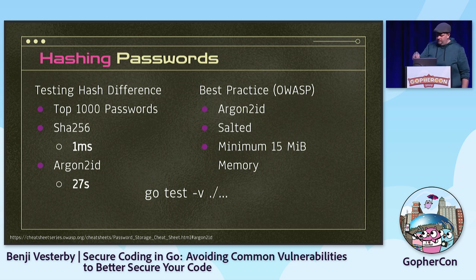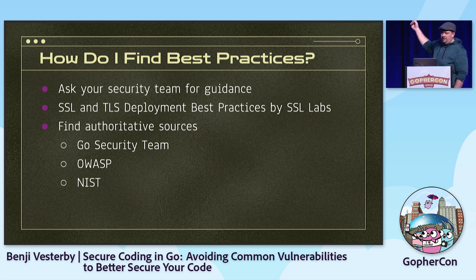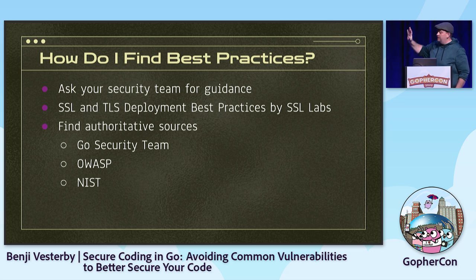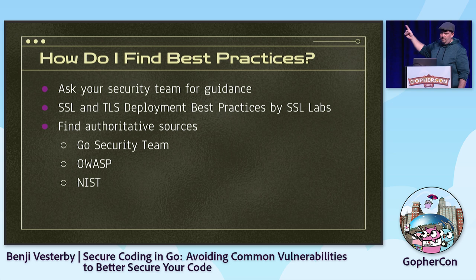For best practices, look to OWASP as a good resource. Ask your security team if you have one. For TLS, TLS 1.3 means the Go team takes it out of your hands — they ensure correct algorithms. If you have to handle legacy applications with TLS 1.1 or 1.2, SSL Labs is a great resource for which algorithms to use. Look for authoritative sources: the Go security team, OWASP, and NIST.